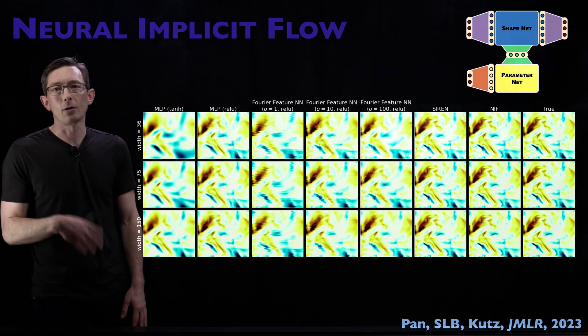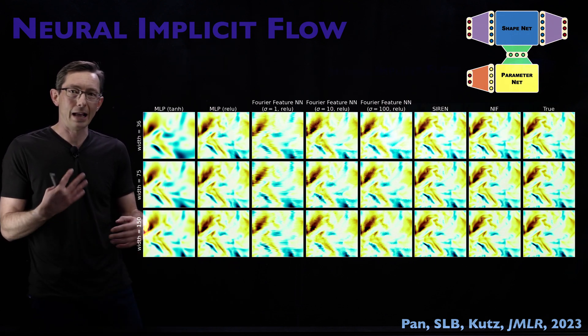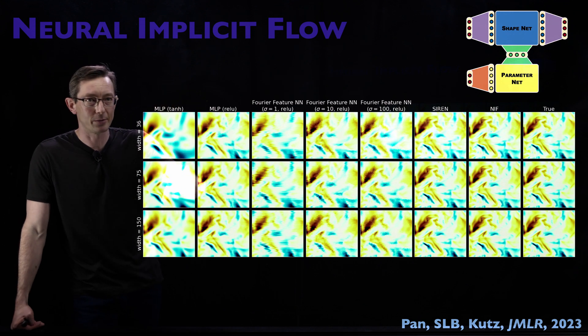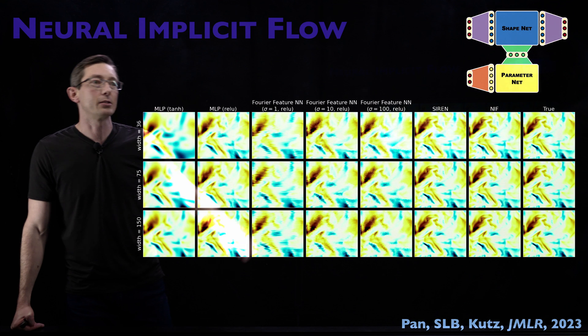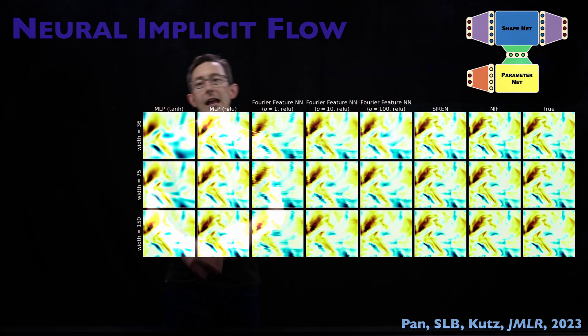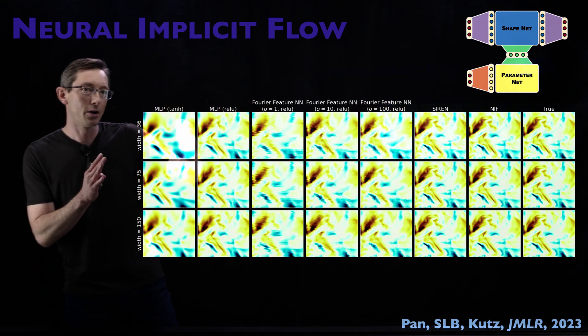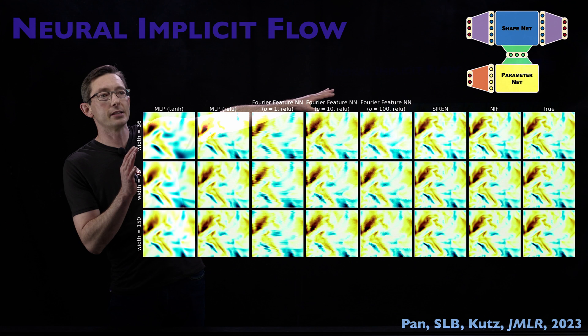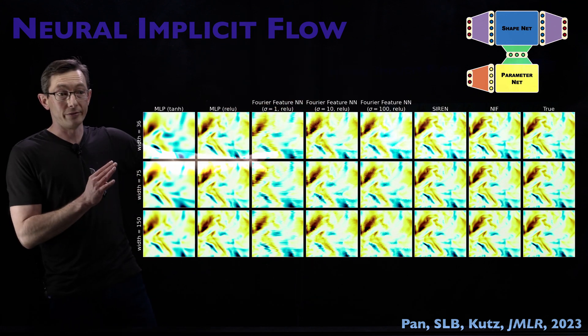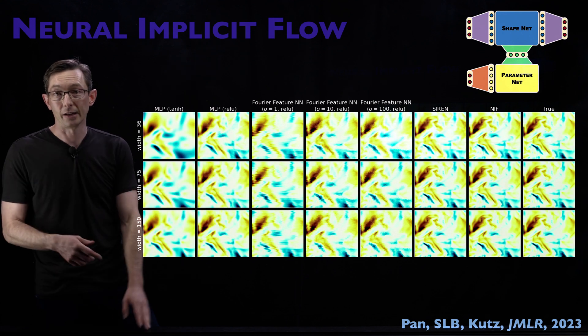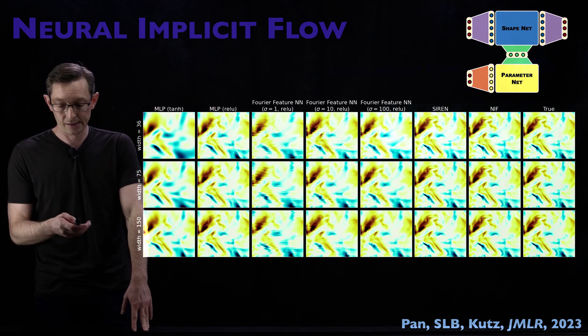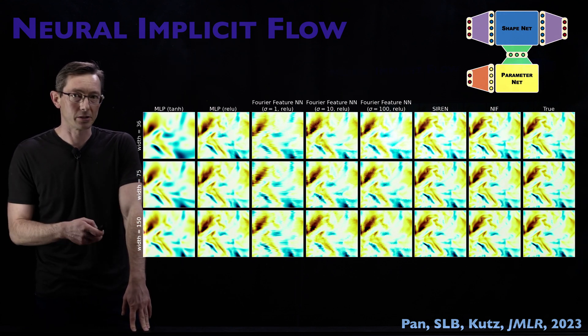And this is just more benchmark data showing what would happen if you had different MLPs with different activation functions or Fourier kind of neural networks or siren layers. And the upshot here is that as you go from left to right, the ground truth is on the right. The Neural Implicit Flow, this method here, is the second to the right and is most faithfully capturing the true physics of this, I believe, decaying isotropic turbulence.